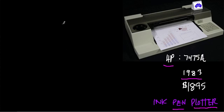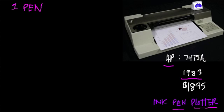For our imaginary pen plotter, we assume that we have one pen. There's no paper-moving technology — it's one pen that moves around and draws this image. That will give us a basic idea of how to generalize and make all of our ink pen plotters efficient.